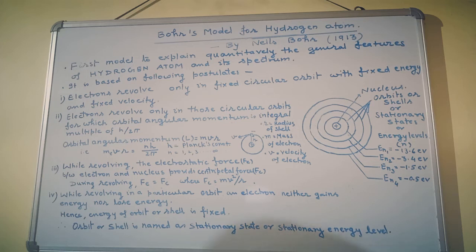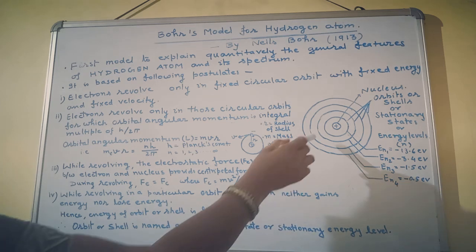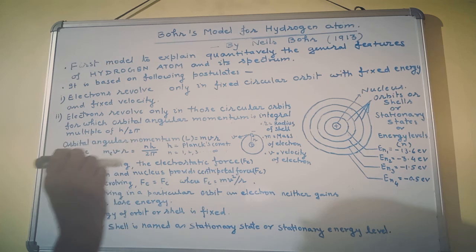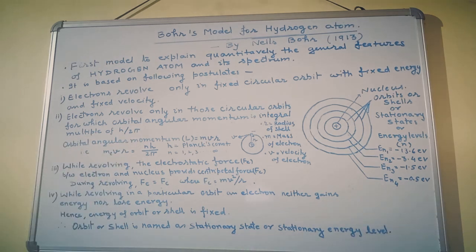The concept was that as long as an electron revolves in a fixed circular orbit which has fixed energy and fixed velocity, the electron neither loses its energy nor absorbs energy. As long as it revolves in one particular circular orbit, its energy is fixed. Therefore, orbit or shell is named as stationary state or stationary energy level.